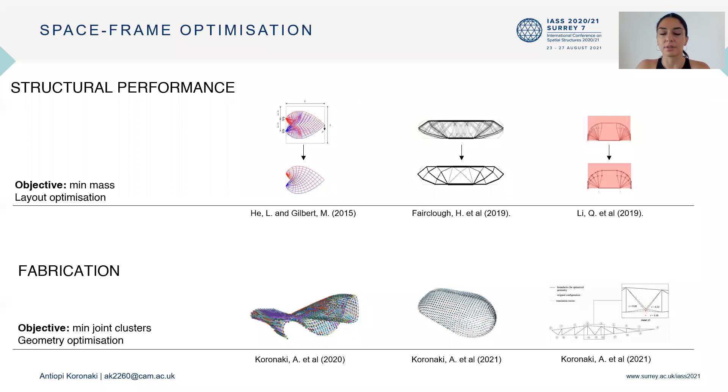Both of these topics have been studied in literature, with layout optimization methods being developed to minimize material mass and geometry optimization methods to minimize fabrication complexity. In both cases, the main objective of the optimization has been either structure or fabrication, and the other has been applied as a post-process.